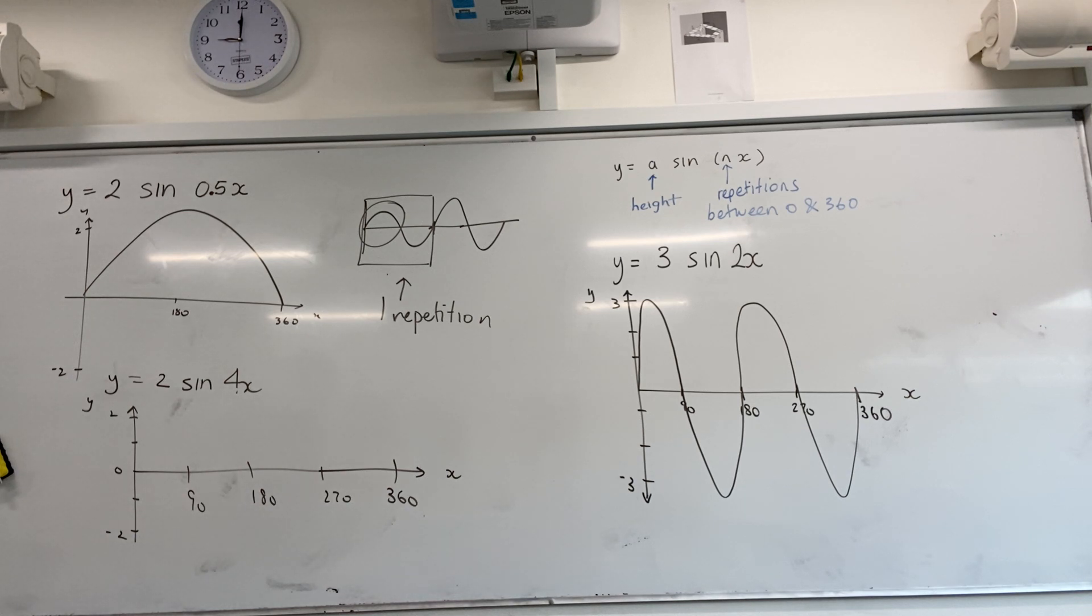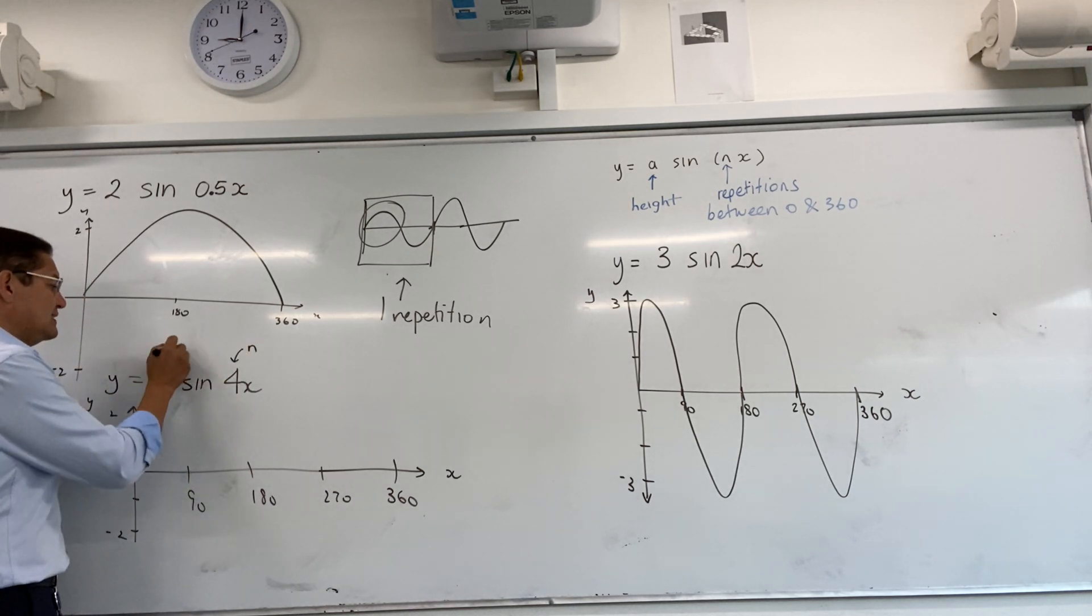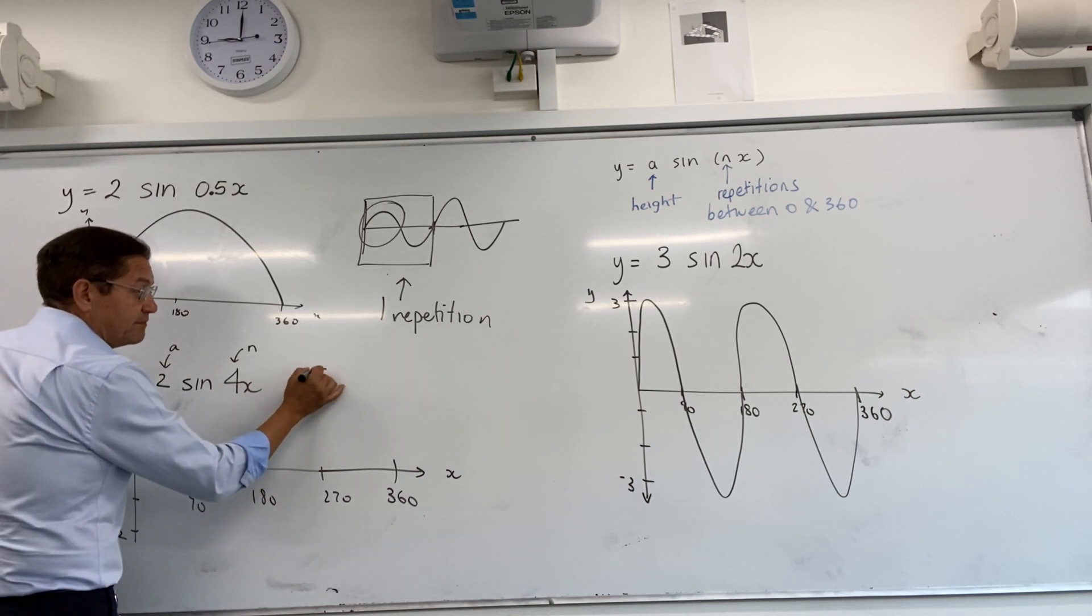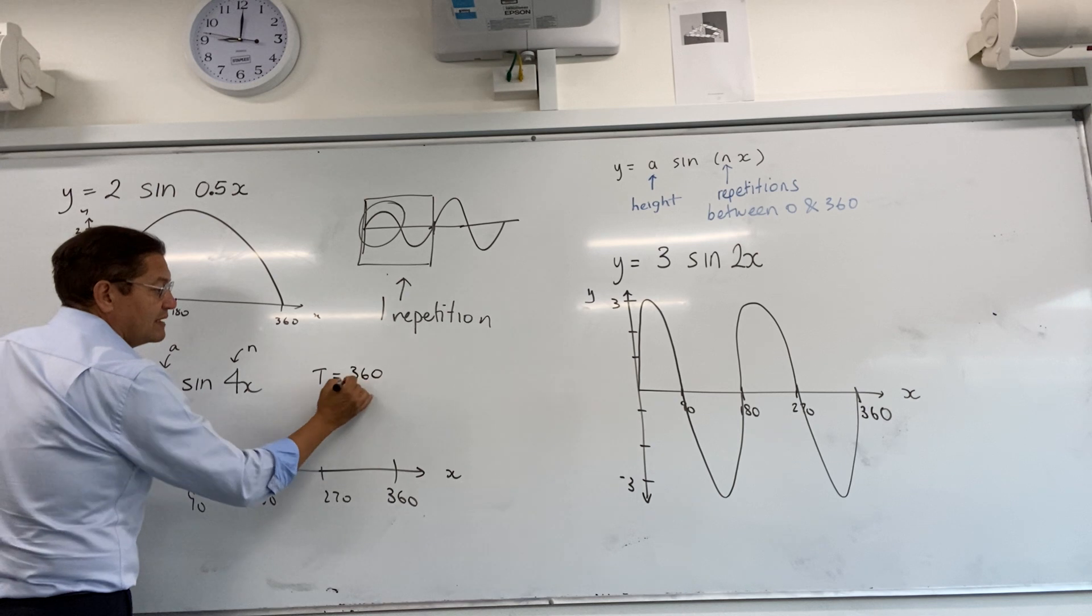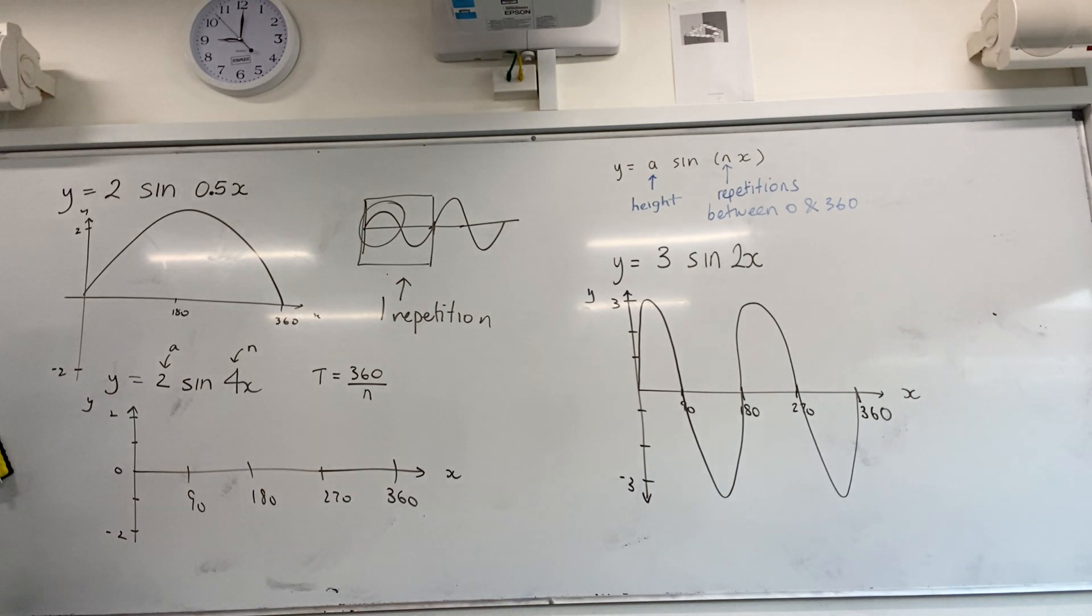Do you remember how I said the period is the distance for one repetition? And I said this here was the frequency and this is the amplitude. There's a formula for the period. It says 360 divided by n. n is how many times it repeats. Now it repeats four times, so in this case here the period would be 360 divided by 4 is 90.